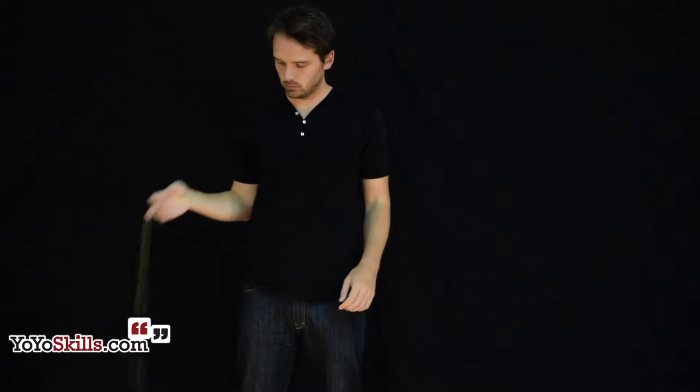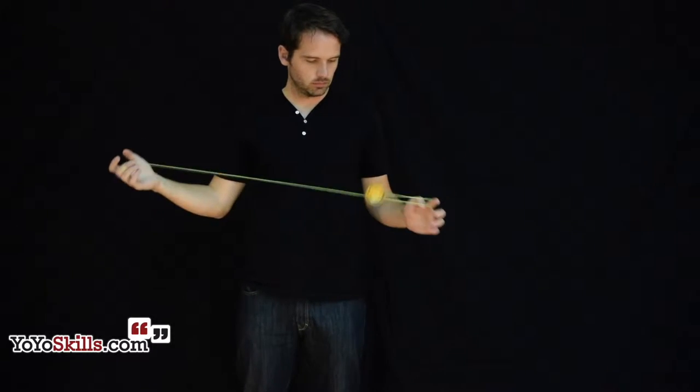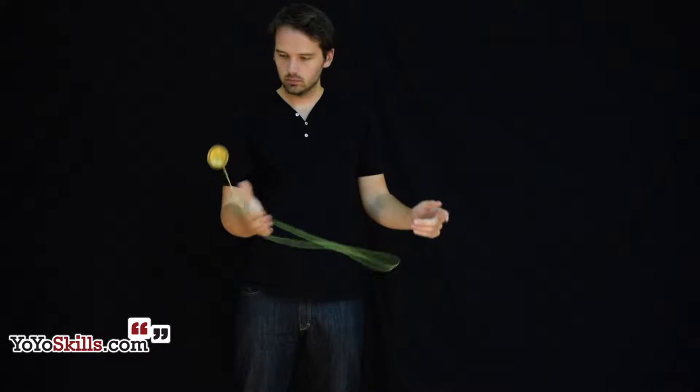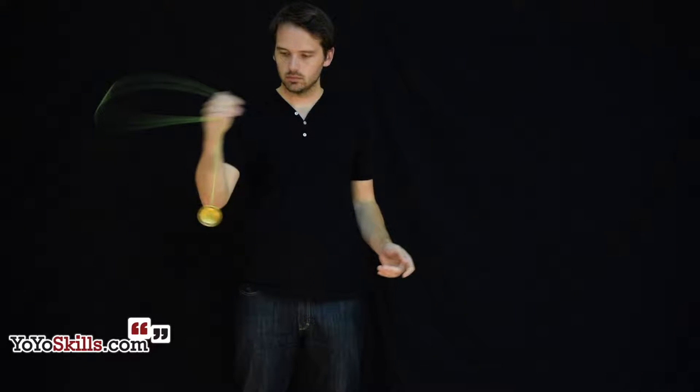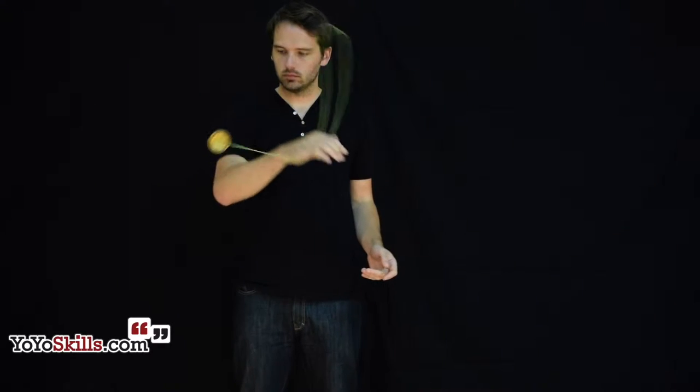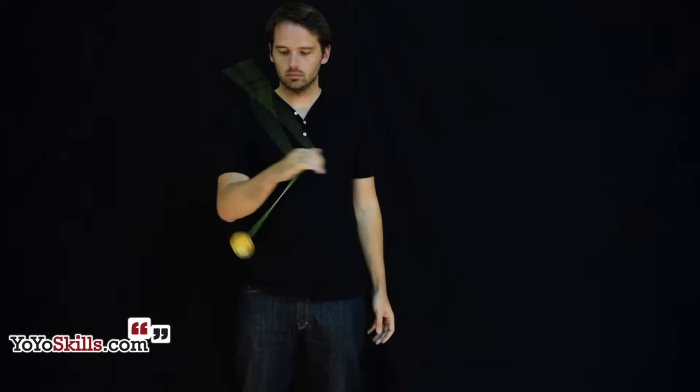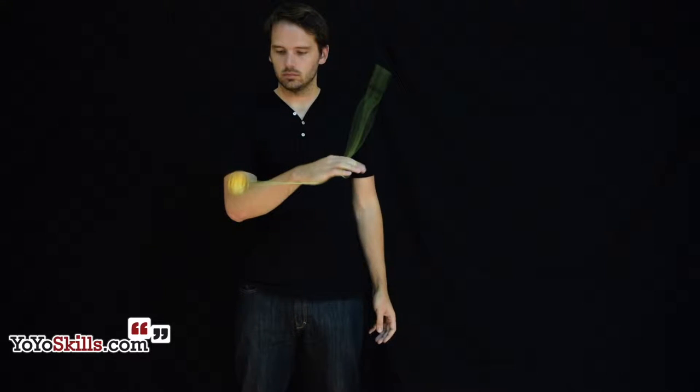To start this trick, set up just like you're about to do a Jade Whip. Instead of catching the yo-yo on that first pass, pop the yo-yo up and bring that loop all the way around it. When your yo-yo and your throw hand are about level with one another, release that loop.